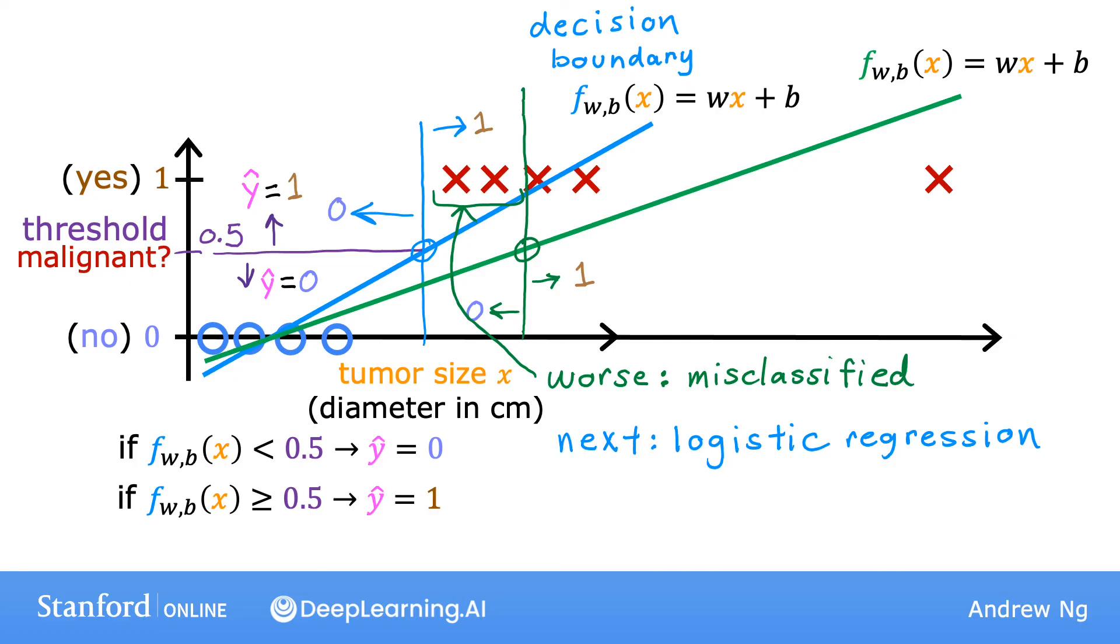By the way, one thing confusing about the name logistic regression is that even though it has the word regression in it, it's actually used for classification. Don't be confused by the name, which was given for historical reasons. It's actually used to solve binary classification problems where the output label y is either 0 or 1.